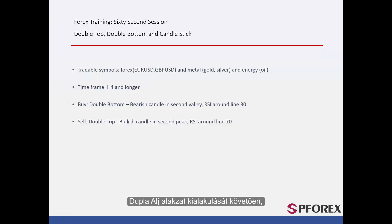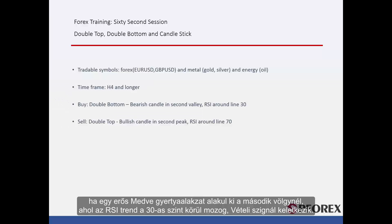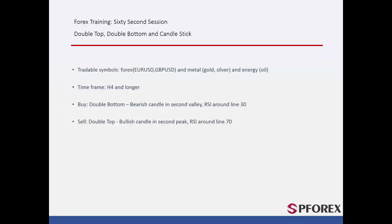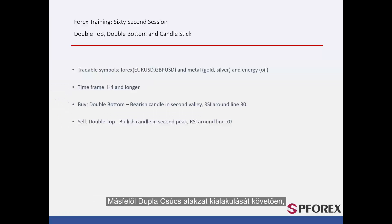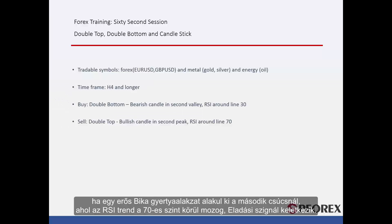After a double bottom pattern has formed and a powerful bearish candle forms on the second valley where the RSI trend is around level 30, then a buy signal would be generated. On the other hand, after a double top pattern has formed and a powerful bullish candle forms on the second peak where RSI trend is around level 70, then a sell signal would be generated.